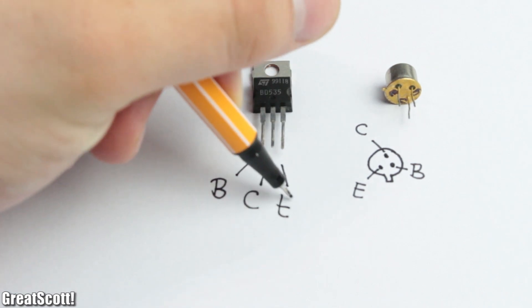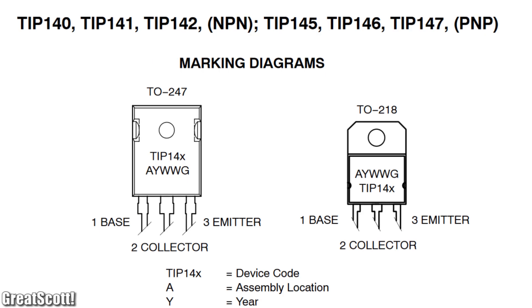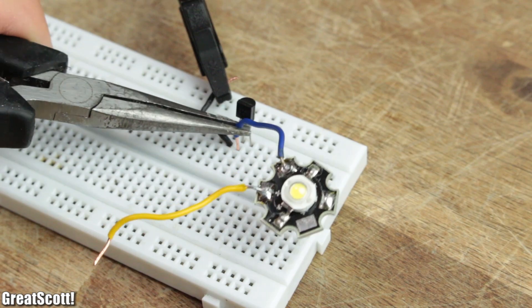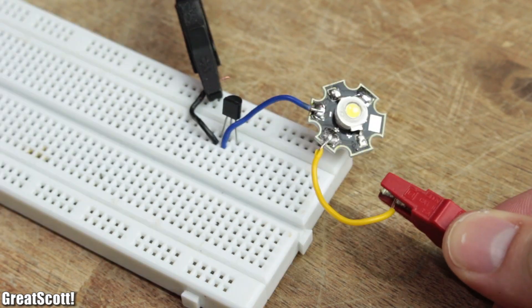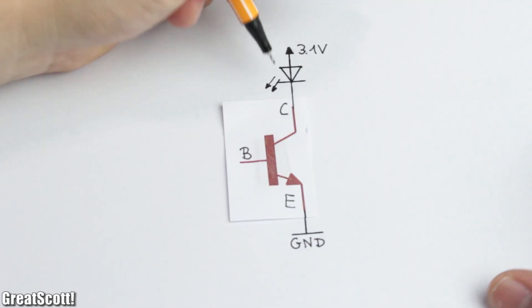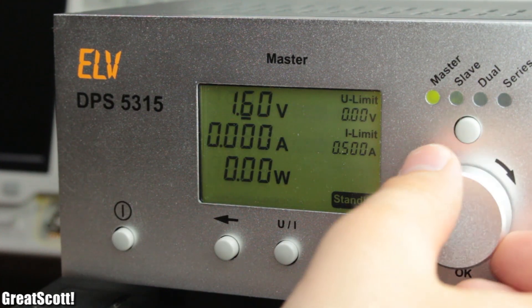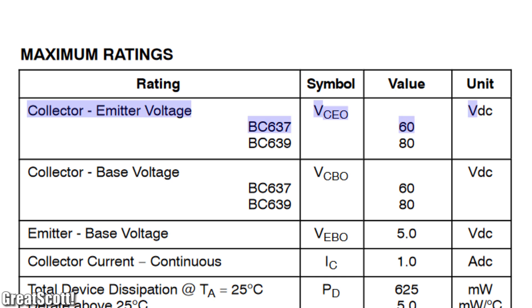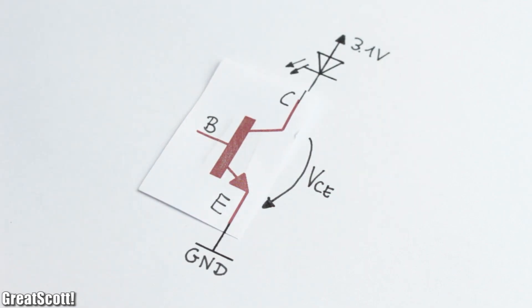And since they come in a variety of different packages, you should always check beforehand which pin is which in the datasheet. For my simple switch circuit, I connected the emitter to ground and the load between the supply voltage of 3.1 volts and the collector. But you should always be careful that your supply voltage does not exceed the maximum rated collector-emitter voltage of the transistor.